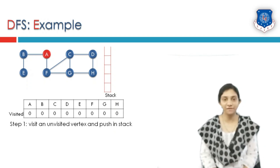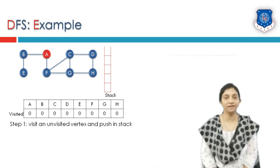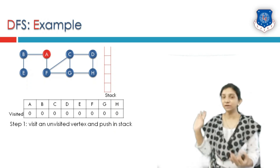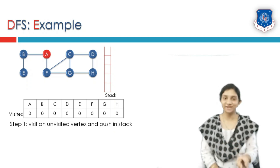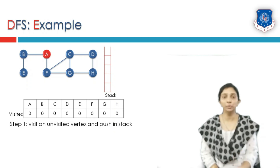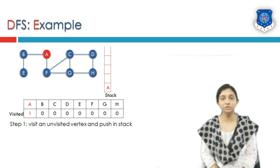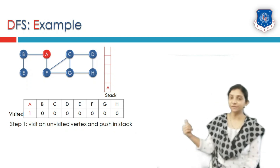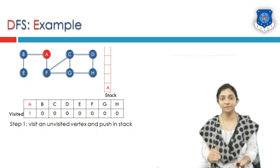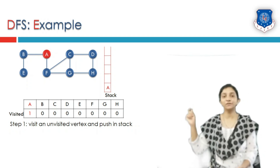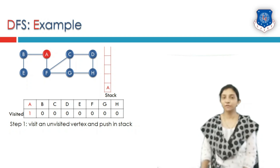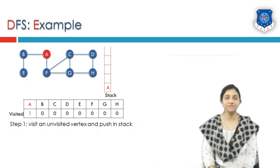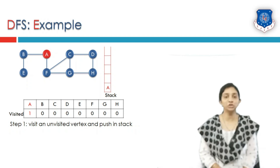Let us start from our selected root vertex, which is A. You can select any of the eight vertices as your root vertex, but here I am working alphabetically, so I am selecting vertex A. This vertex is pushed inside the stack as soon as it is visited. When we say a vertex is visited, we change its entry in the visited array from zero to one. So the entry of A in the visited array is set to one and it is also pushed inside the stack.